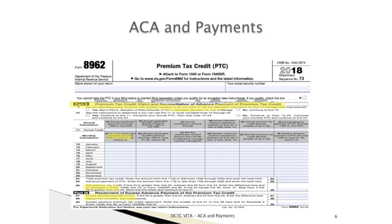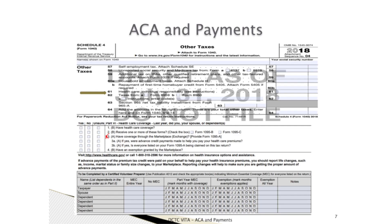Premium tax credit only comes into play when the taxpayer purchases health insurance coverage from the marketplace. Once again, this information is found in Publication 4012, pages H-5 through H-32. Now, line 61 is our health care individual responsibility. This line deals with health care coverage in general. Allow me to generalize here once again.